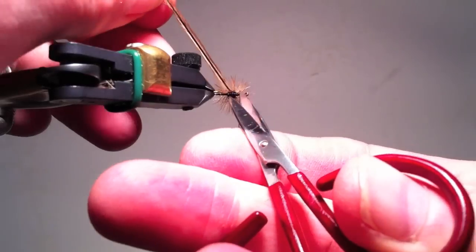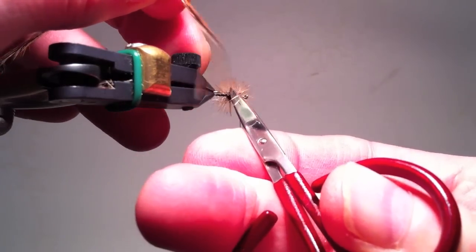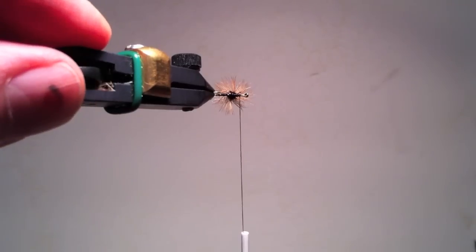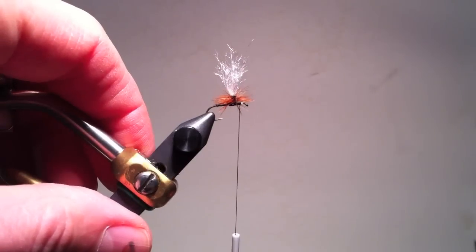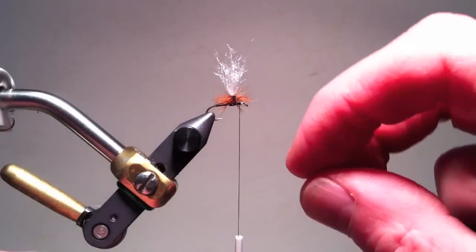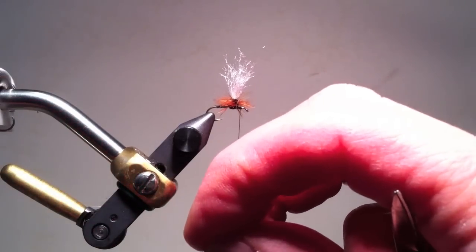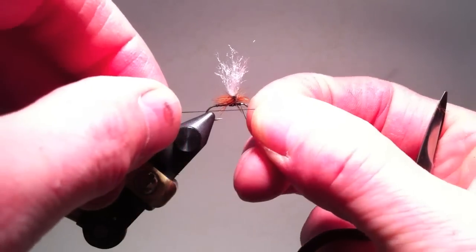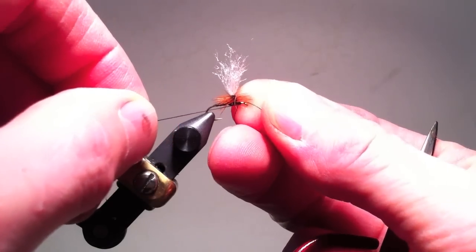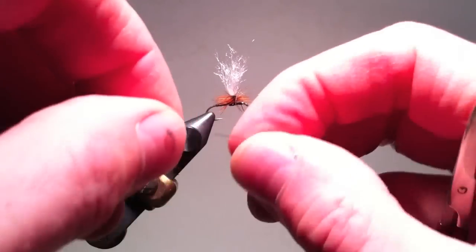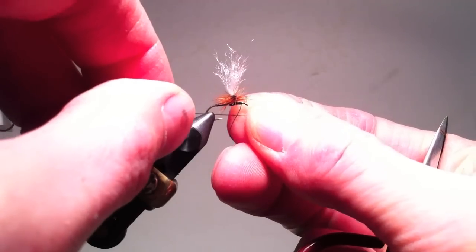Either before or after tying off the thread, I clip the excess hackle, and then tie my thread off. In this case, I'm using half hitches for demonstration purposes, although commonly I use the whip finisher.